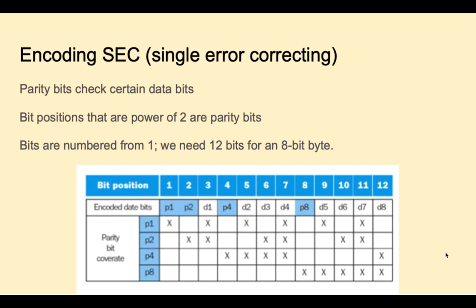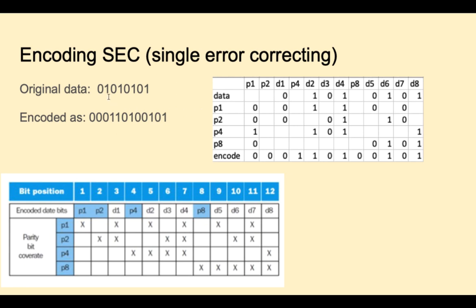I put some data in a spreadsheet. Let's say this is our original data: 01, 01, 01, 01 — these are the data bits. I've set the four parity bits accordingly using even parity. For example, parity bit 1 checks itself, data 1, data 2, data 4, data 5, and data 7 — there are two 1s there, which is even, so parity bit 1 is zero. Parity bit 4 checks data 2, data 3, data 4, and data 8 — there are three 1s there, so we put a 1 there to make it even parity. So we encoded these 12 bits to represent the 8 bits of original data plus the parity.